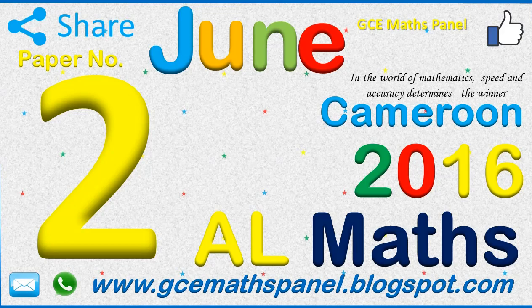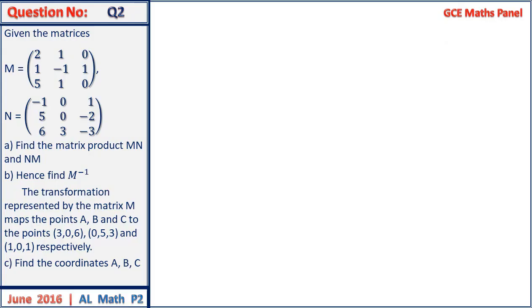Hello and welcome to June 2016 Question 2. Given the matrices M equals that and N equals that, find the matrix product MN and NM. So the matrix product MN is given by matrix M times matrix N.